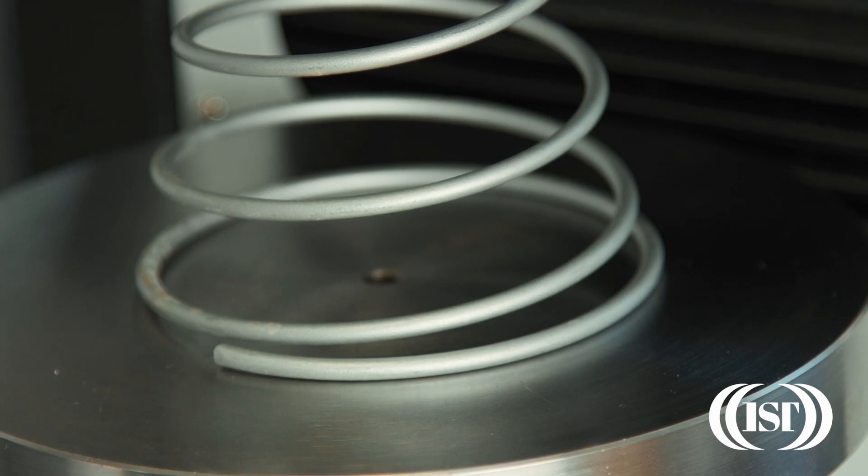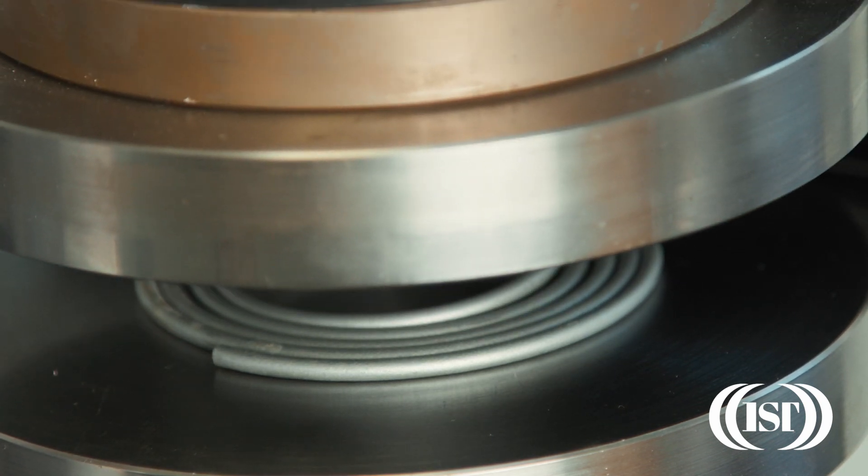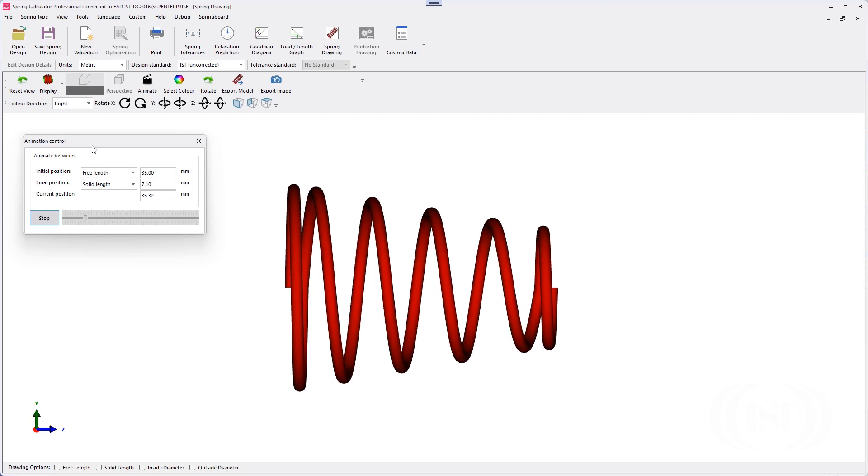Because the stiffness of each coil depends on its diameter, it varies along the length of the spring. The large coils have low stiffness and deflect more.